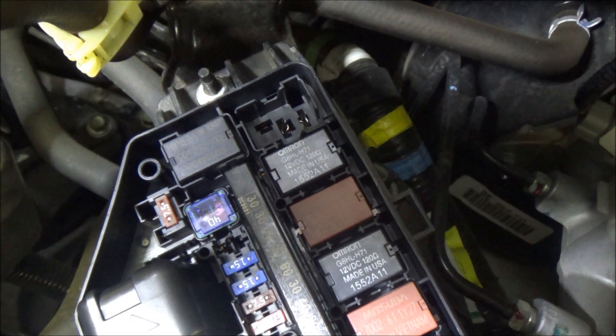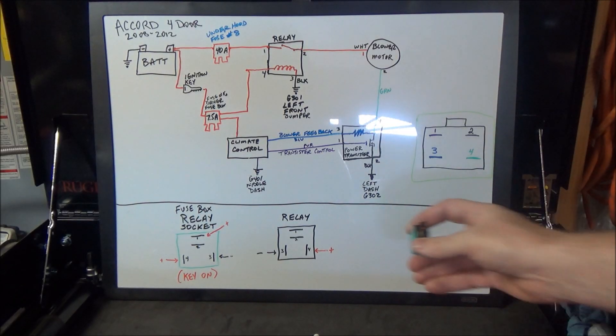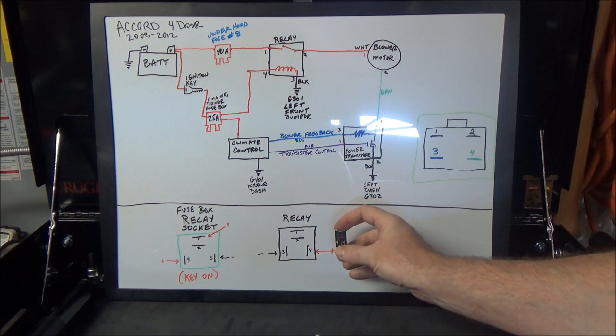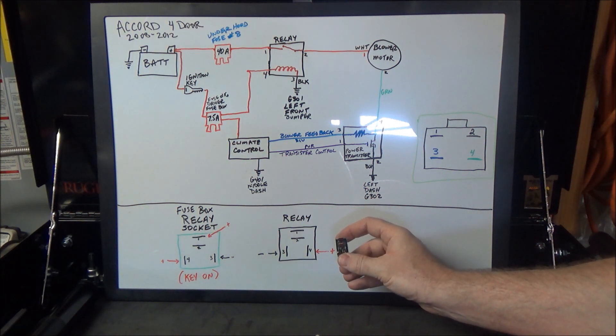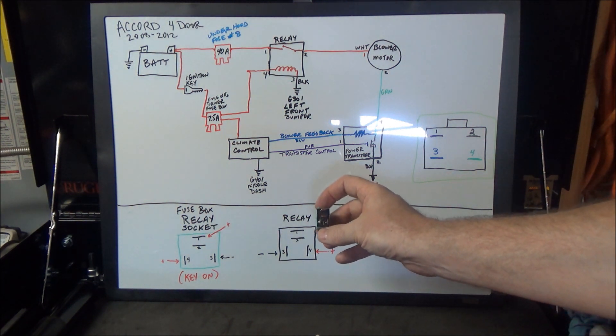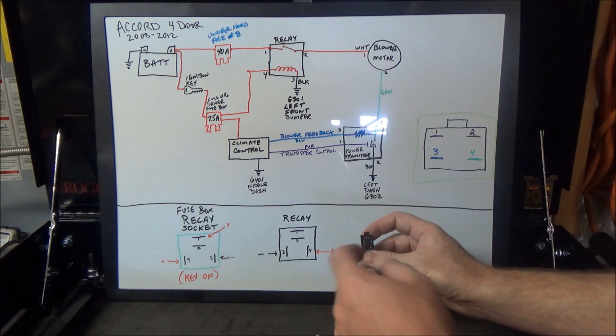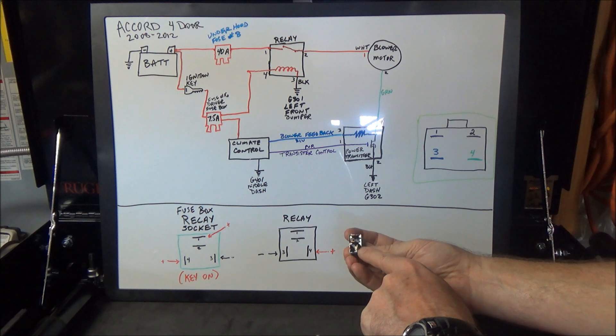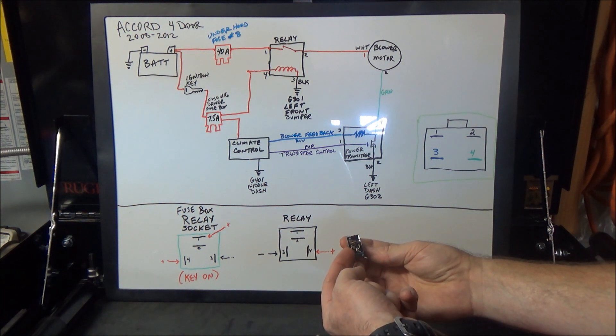You can see how the pins are laid out right on the relay. All we need to do to test this relay is supply power and ground just like the car does. We'll put battery positive to terminal four here and we'll put negative or body ground to terminal three.